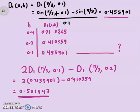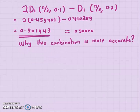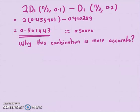The exact solution is 0.500000. Taking approximate minus exact, you have an error of about 0.001. Why is this combination more accurate? To answer this, you'll need to wait — I still have to find the approximation using the D2 formula.